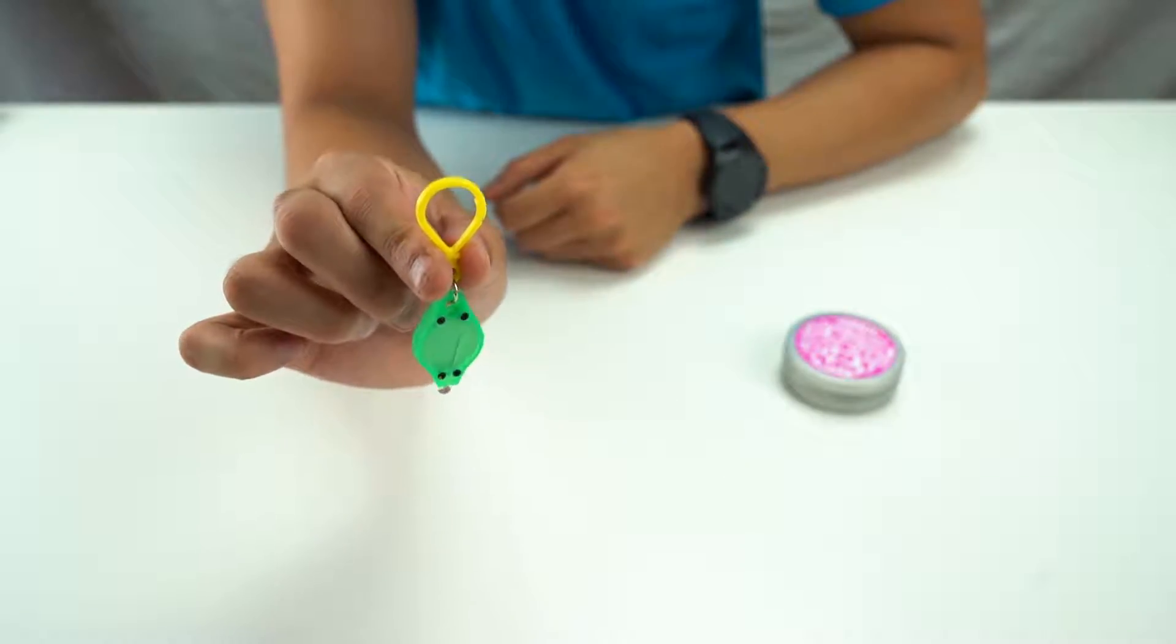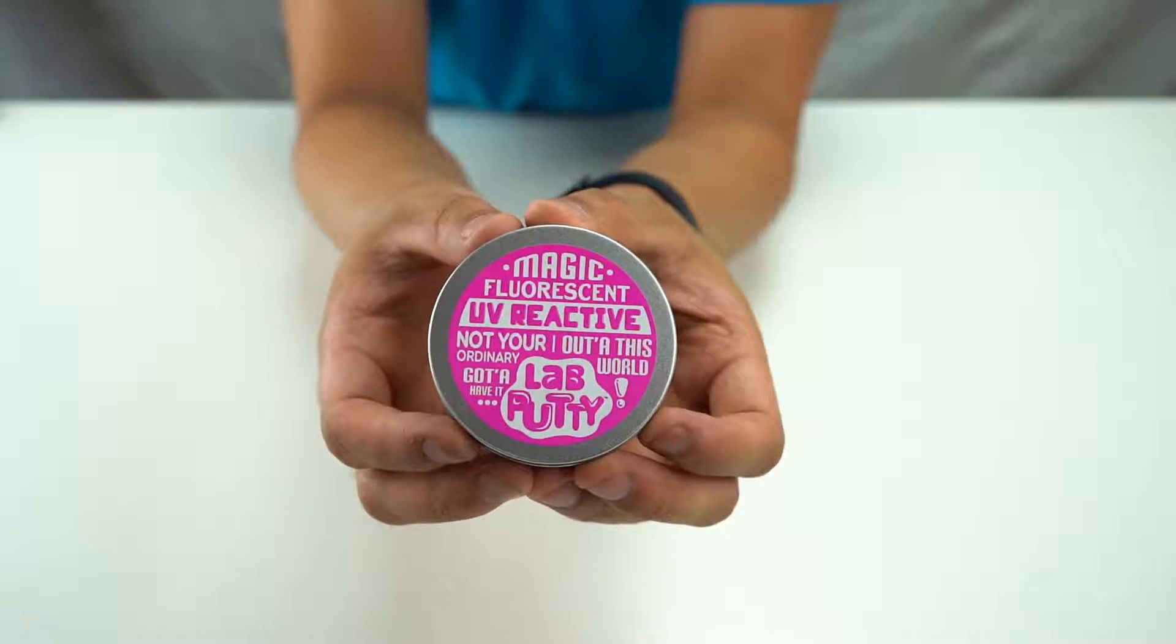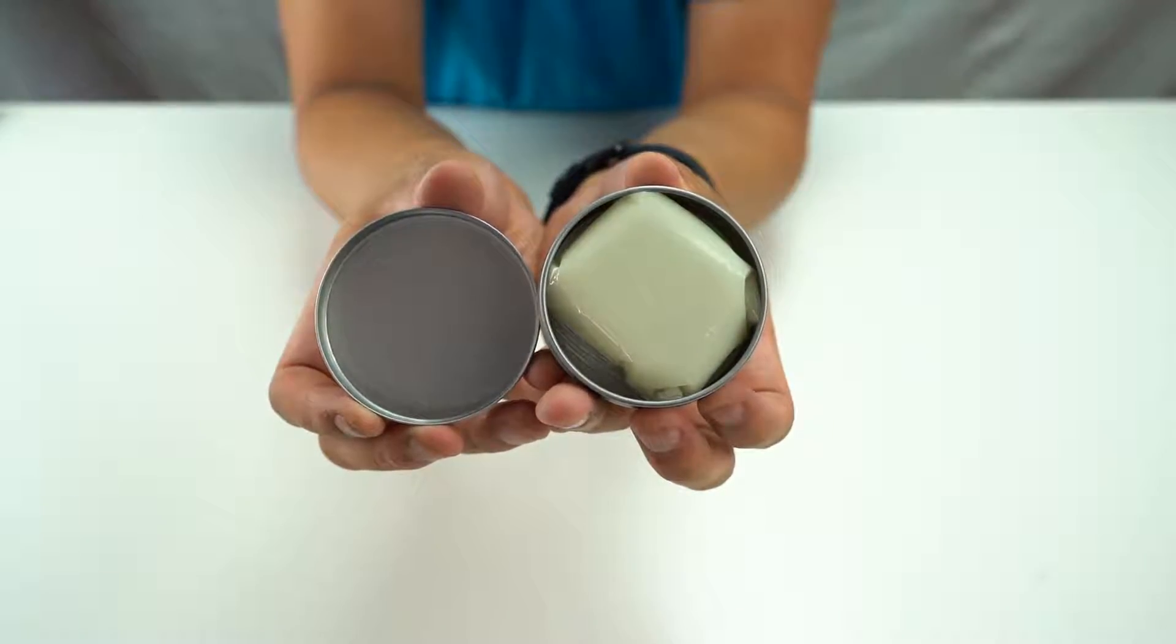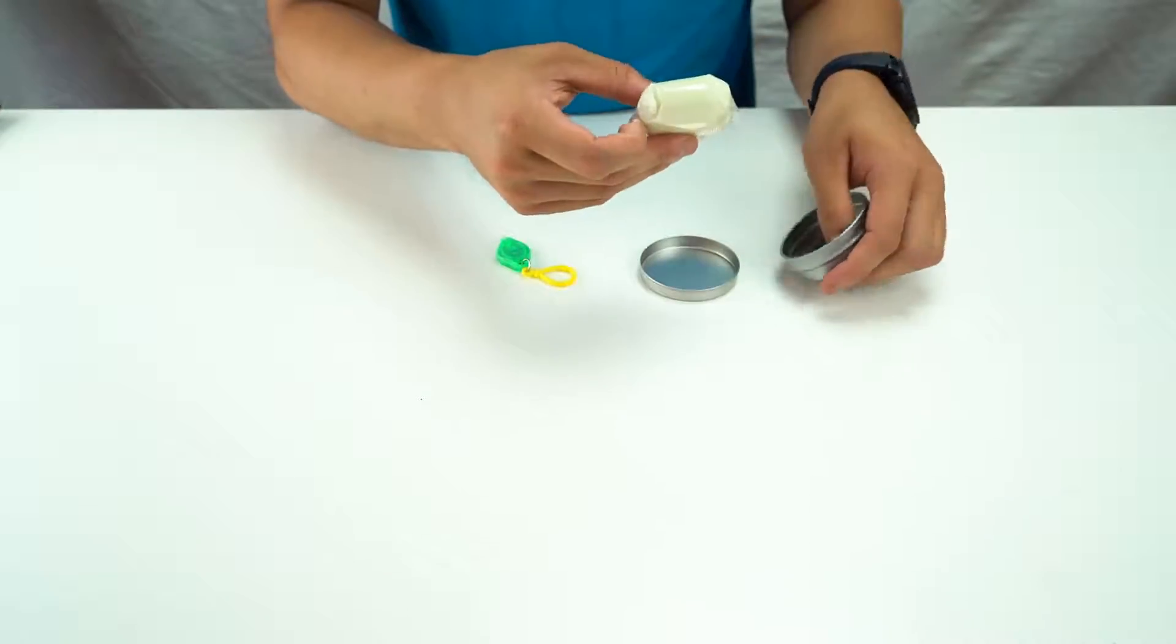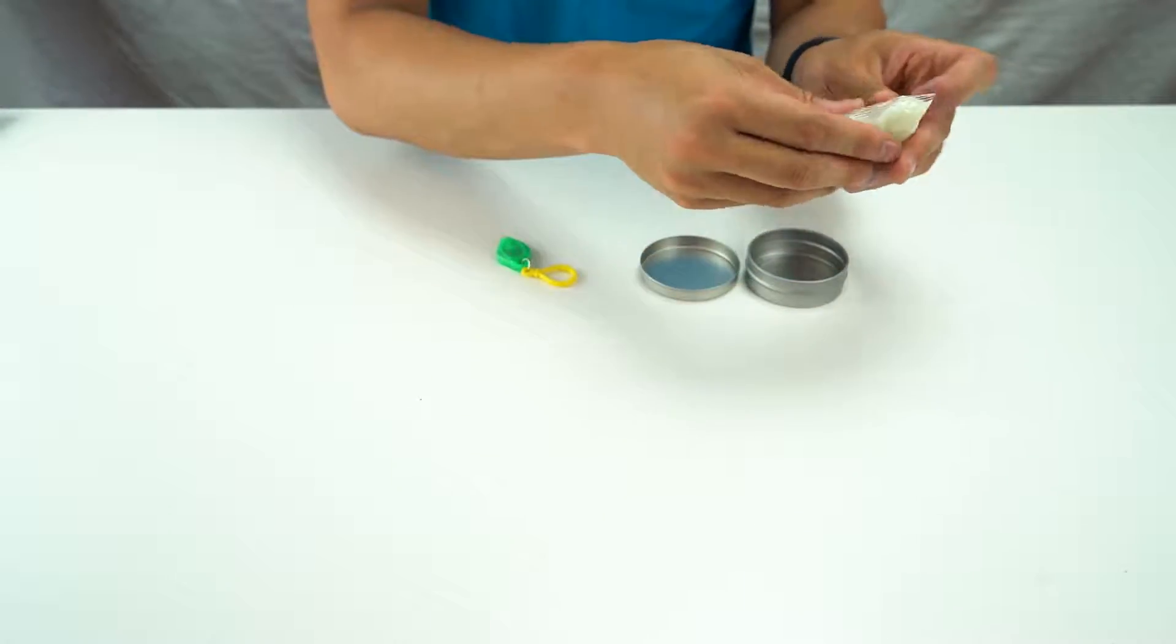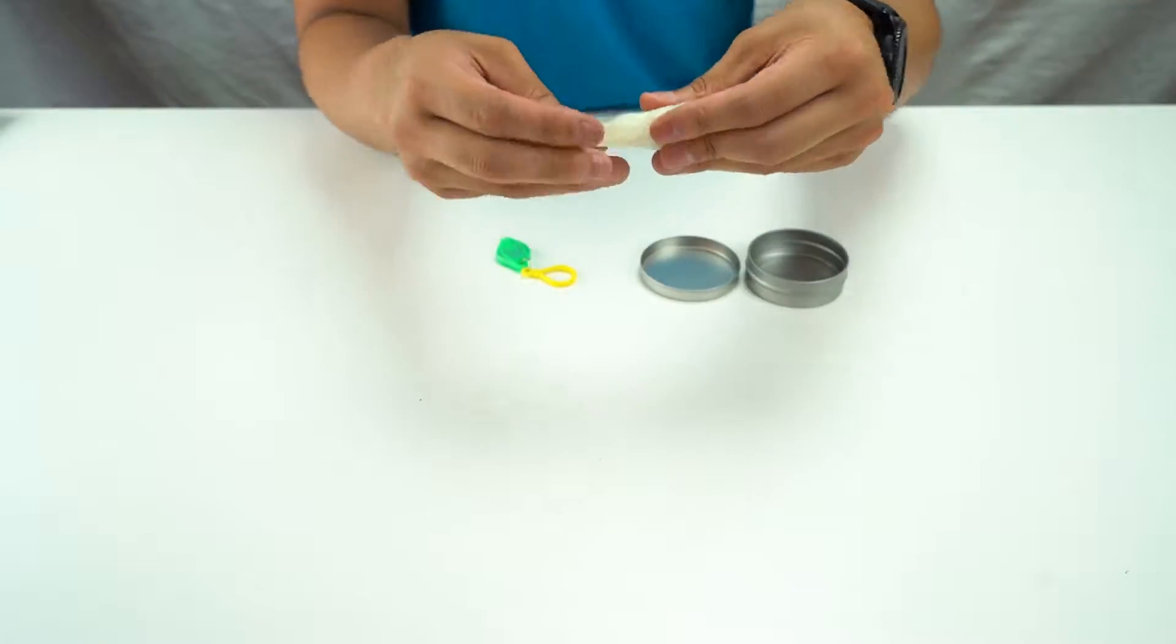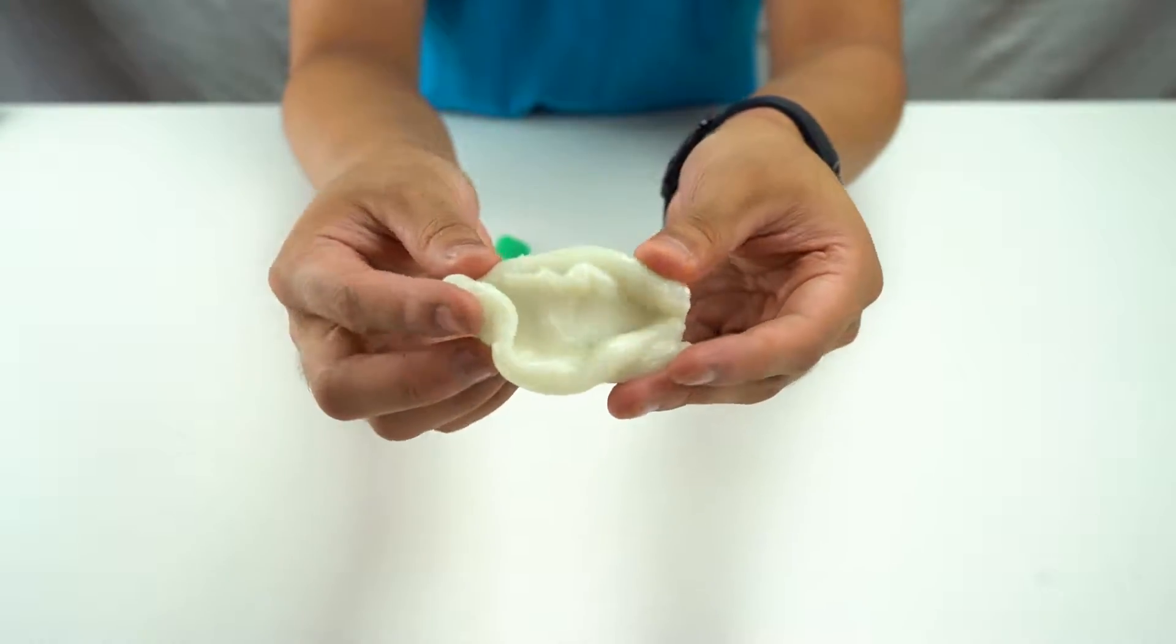You can put it on your keychain if you want. And here we have the UV reactive lab putty. Let's open it up here. Interesting color. All right, so let's take it out of this plastic packaging. Oh, I just created like a little bubble. All right, here we go. There's the putty.